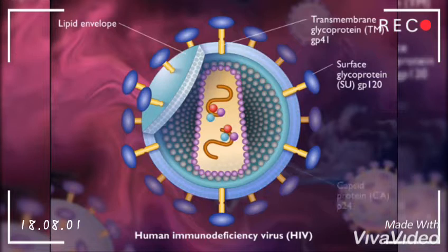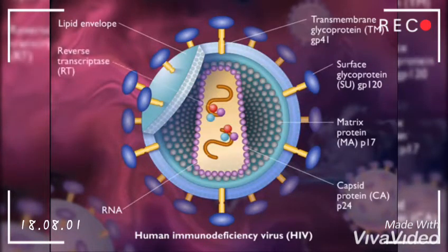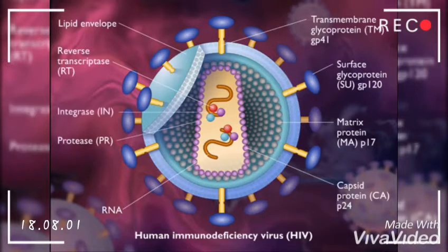The core is composed of p24 capsid protein, and the p17 matrix protein helps maintain viral structure. Inside the core are two identical copies of single-stranded RNA viral genome and three enzymes: reverse transcriptase, protease, and integrase.